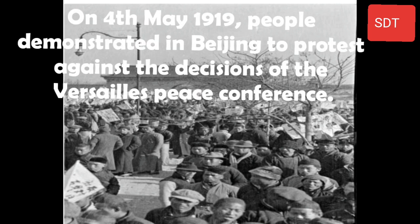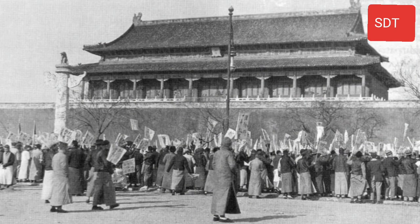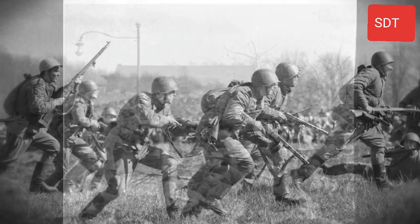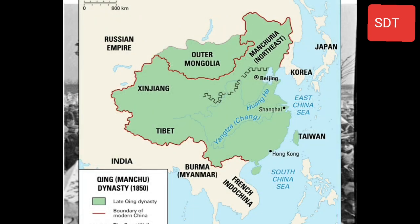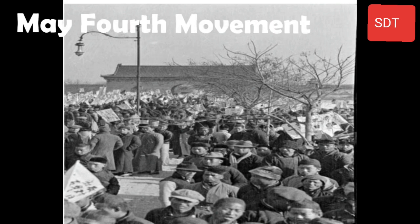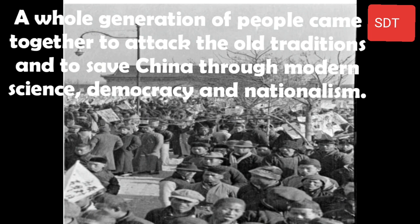On 4th May 1919, people demonstrated in Beijing to protest against the decisions of the Versailles Peace Conference. Even though China was an ally of the victorious side led by Britain in World War I, it did not get back the territories taken away by Japan. This protest turned into a movement called the May 4th Movement. A whole generation of people came together to attack old traditions and save China through modern science, democracy and nationalism.